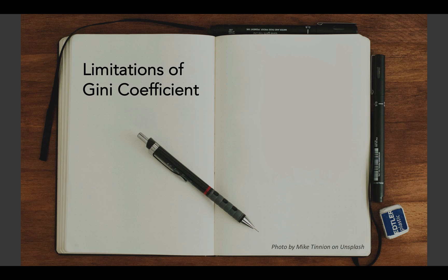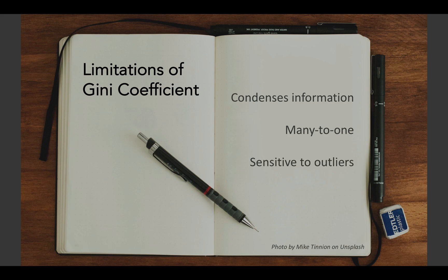There are definitely limitations to the Gini coefficient. The first is true of any summary statistic — Gini coefficient condenses information, so we lose the granularity of the original data set because we're condensing down to just one numerical value. That also means Gini coefficient is many-to-one: there are many different distributions that can map to the exact same Gini coefficient value. Gini coefficient is also sensitive to outliers — one additional very large or very small value can result in dramatically different Gini coefficients. In terms of economy, Gini coefficient has also been criticized because it may not be sensitive enough to changes in a population's poorest or wealthiest communities. Economists have introduced another metric called the Palma ratio, which specifically looks at the poorest 40% of a population and the wealthiest population.